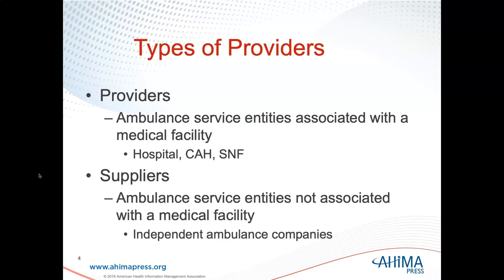Some types of providers: you have ambulance service entities that are associated with a medical facility, like a hospital. You also have independent ambulance service entities that can be providing services, or they may be owned by the local community, government, or county. There are also suppliers that are not associated with a medical facility — independent insurance or ambulance companies.